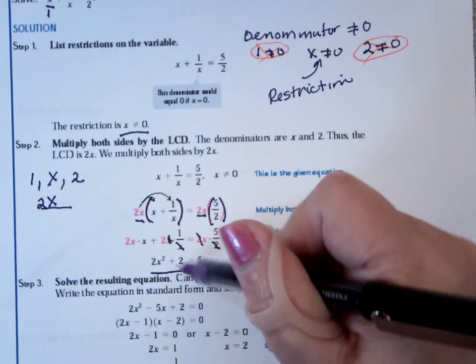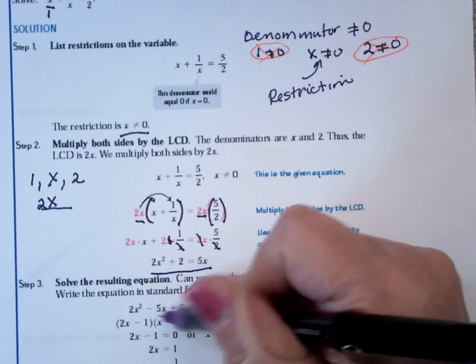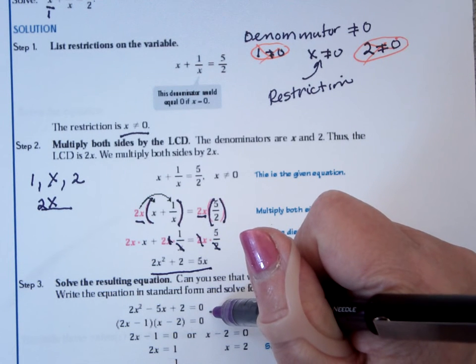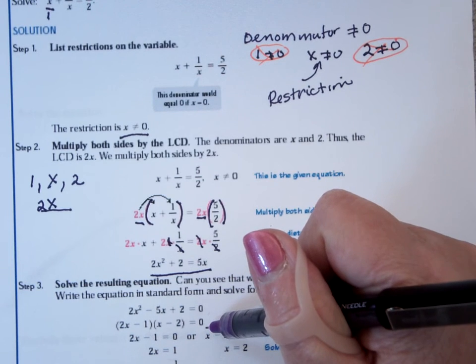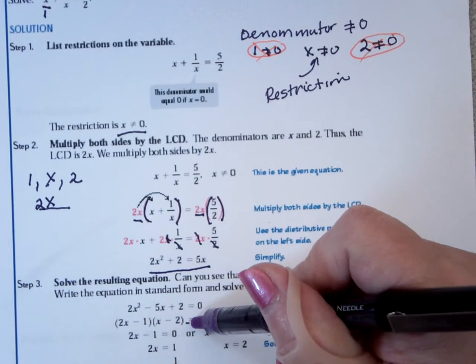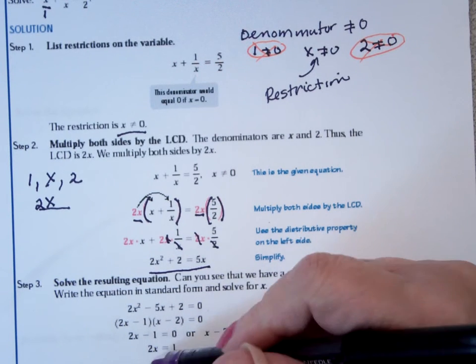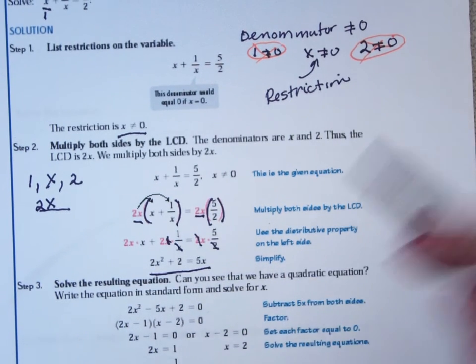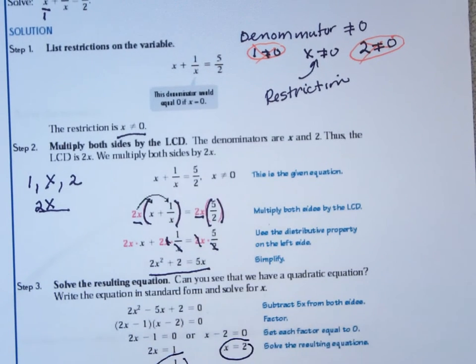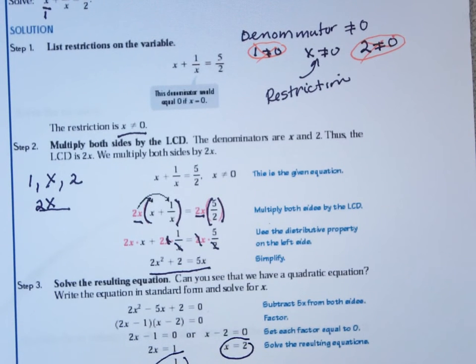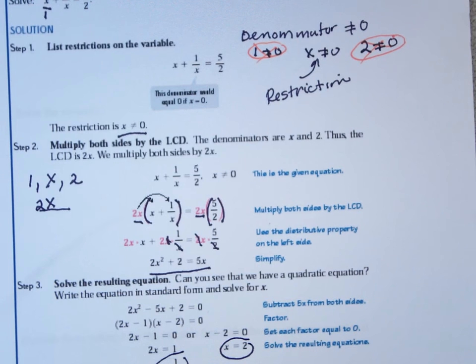It's a quadratic equation, meaning degree 2. So everything on one side, 0 on the other. Again, we see chapter 6 playing a role. Factor. Set each factor equal to 0. Solve for x. I come out with an x value of 1/2, an x value of 2. Neither one of them are 0, so we would assume it has 2 answers. Both of them work.